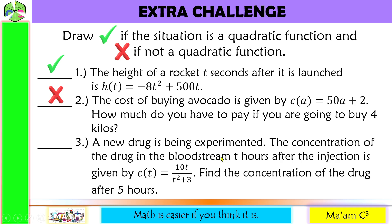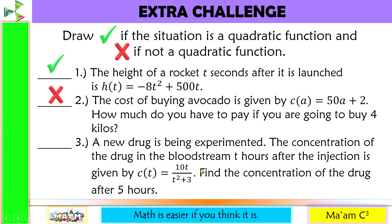Last, a new drug is being experimented with. The concentration in the bloodstream t hours after injection is c of t equals 10t over t squared plus 3. Notice there is a numerator and a denominator — this is a rational function. Not because you see an exponent raised to the second power does it become quadratic. So this is not a quadratic function.